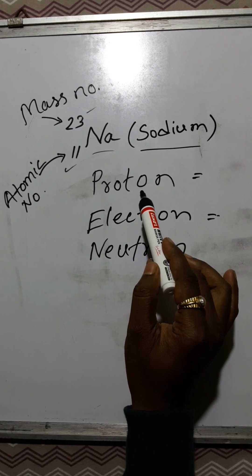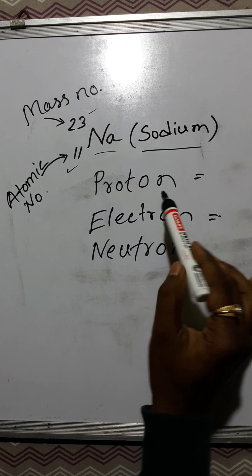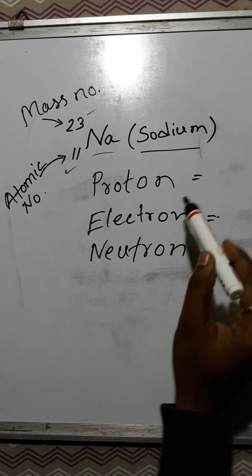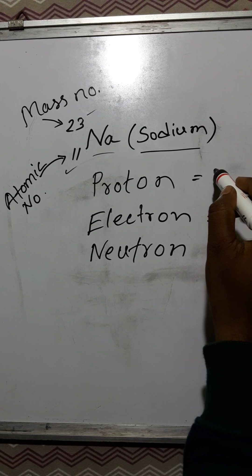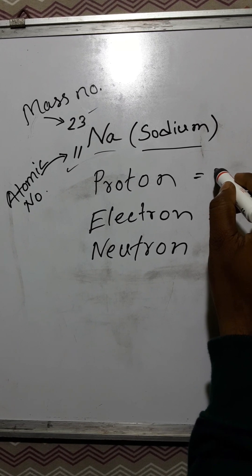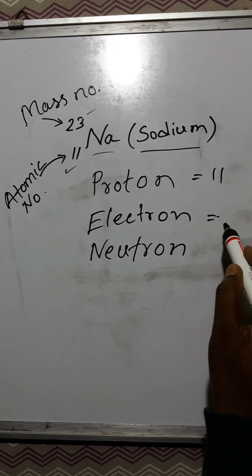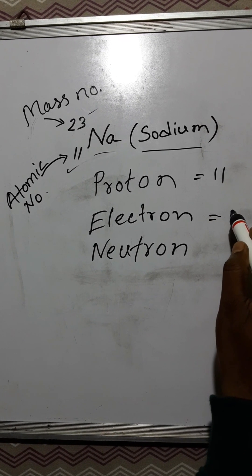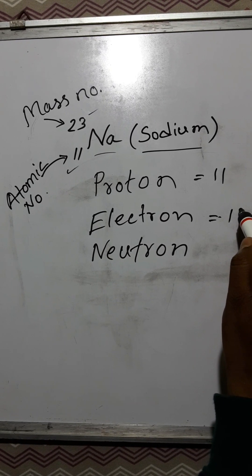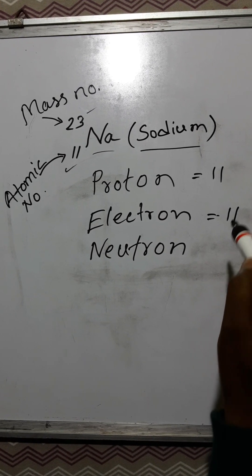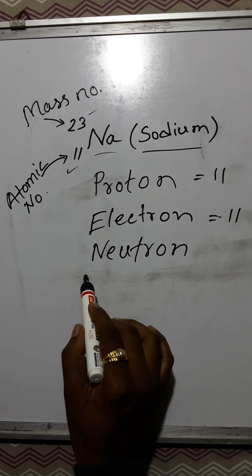The number of protons are equal to atomic number. The atomic number is 11, so the proton number is also 11. Electrons are also equal to protons, so the electron number is also 11.